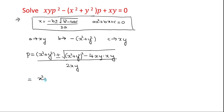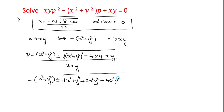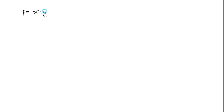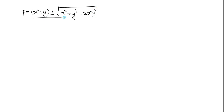On simplifying, it is X squared plus Y squared plus or minus root of X squared plus Y squared whole squared expanded using the A plus B whole squared formula. That gives X to the 4 plus Y to the 4 plus 2X squared Y squared minus 4X squared Y squared, divided by 2XY. So under the square root it is X to the 4 plus Y to the 4, and 2X squared Y squared minus 4X squared Y squared becomes minus 2X squared Y squared.